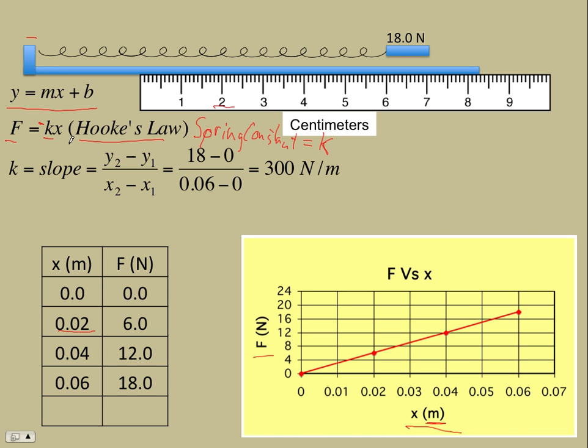Next we have the job of determining the slope. For the slope we pick two points on the line. I'm going to pick x equals 0.06 and y equals 18, and x equals 0 and y equals 0. When we determine the slope we get 300. Watch the units here: we have newtons in the numerator, meters in the denominator, so newtons per meter.